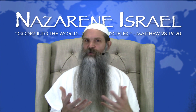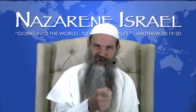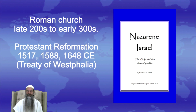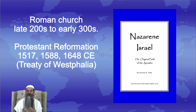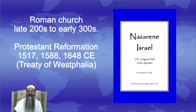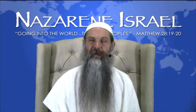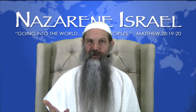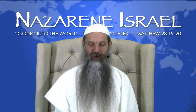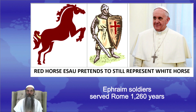People ask what the 1,260 years represent. There are no exact start and stop dates, but we believe it generally refers to the period when Roman Catholic Church doctrine was being solidified from the late 200s to early 300s, and then until the Protestant Reformation beginning in 1517. Some place significance in the sinking of the Catholic Spanish Armada by the Protestant English Navy in 1588, and in 1648 CE the Treaty of Westphalia was signed — a named truce between the Catholics, the red horse, and the Protestants, the white horse.